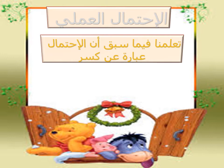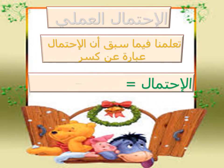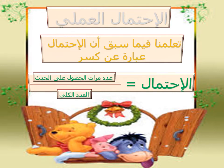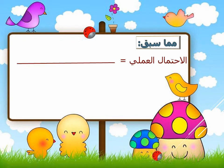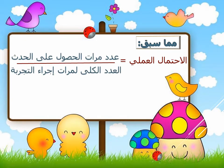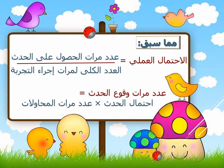أول حاجة هنشوفها هي الاحتمال العملي. الاحتمال بيظهر على شكل كسر بسط ومقام. القانون بيقول: الاحتمال = عدد مرات الحصول على الحدث على العدد الكلي لمرات إجراء التجربة. ولو عايز عدد مرات وقوع الحدث، هقول: احتمال الحدث × عدد مرات المحاولات.